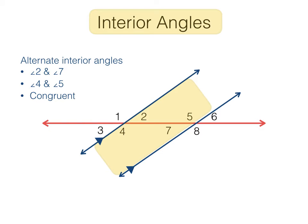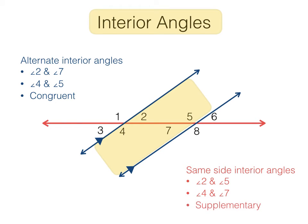Same-side interior angles lie on the same side of the transversal and are inside the parallel lines. Angles 2 and 5 are same-side interior angles, as are angles 4 and 7. Same-side interior angles are supplementary — their measures add up to 180 degrees.